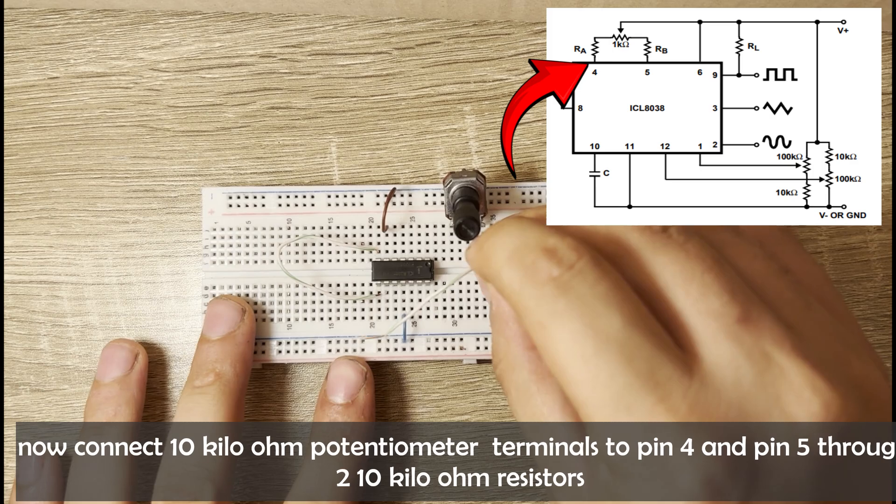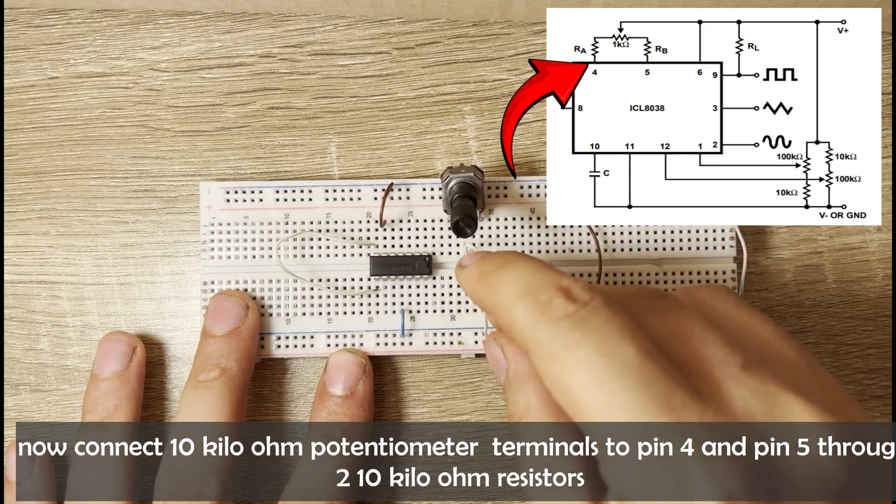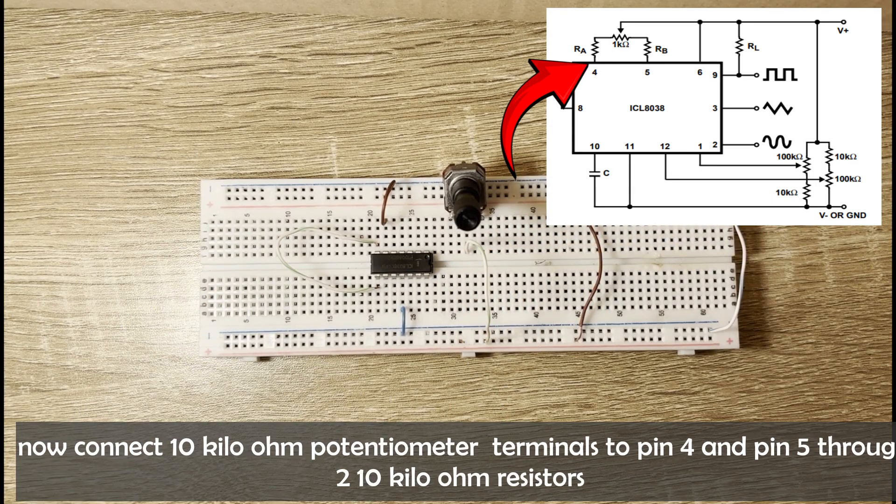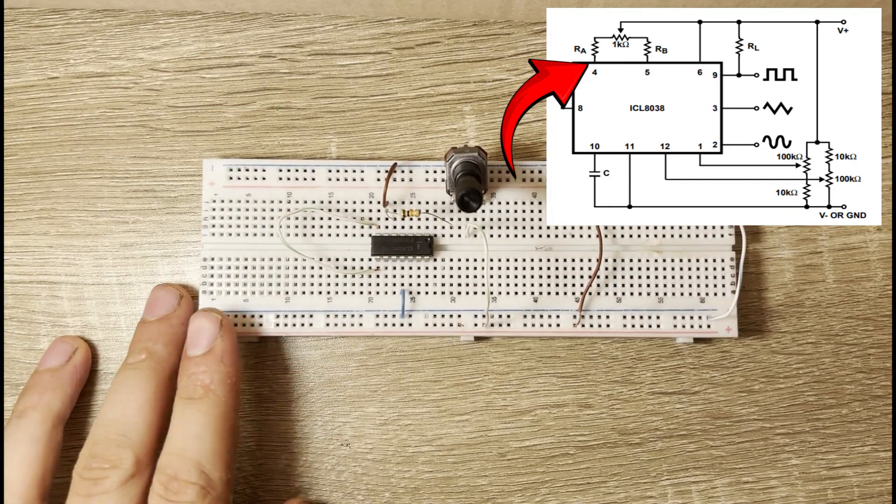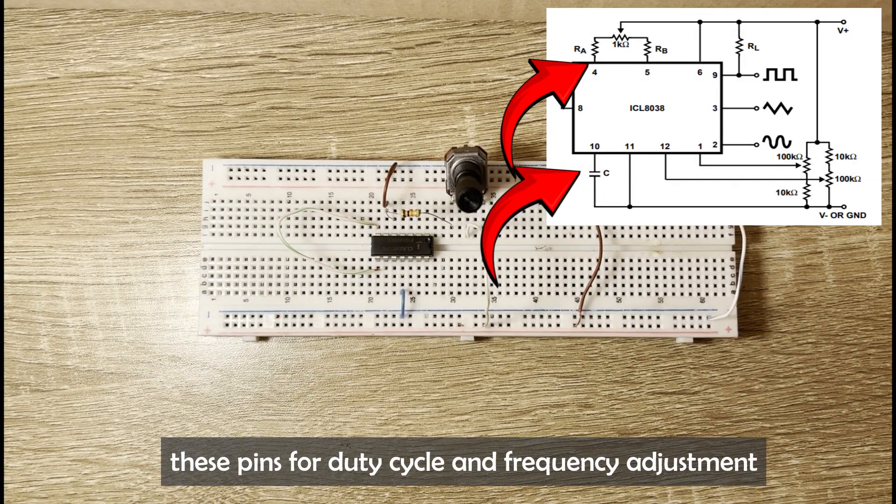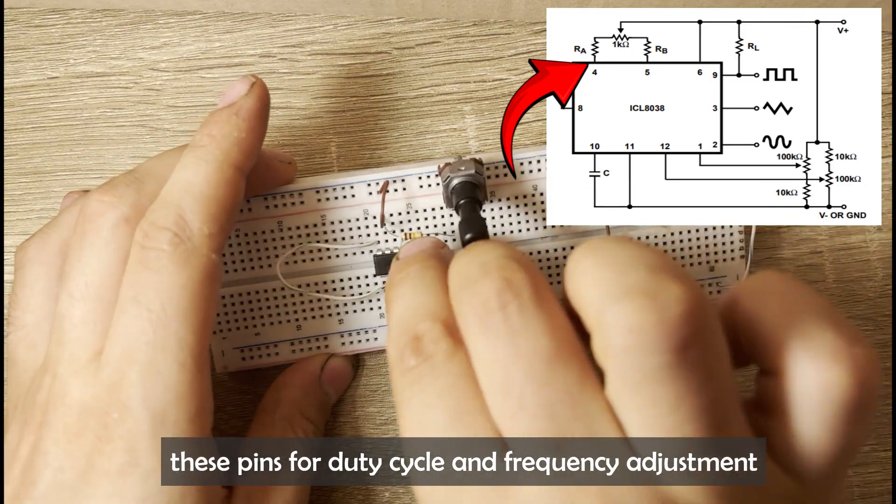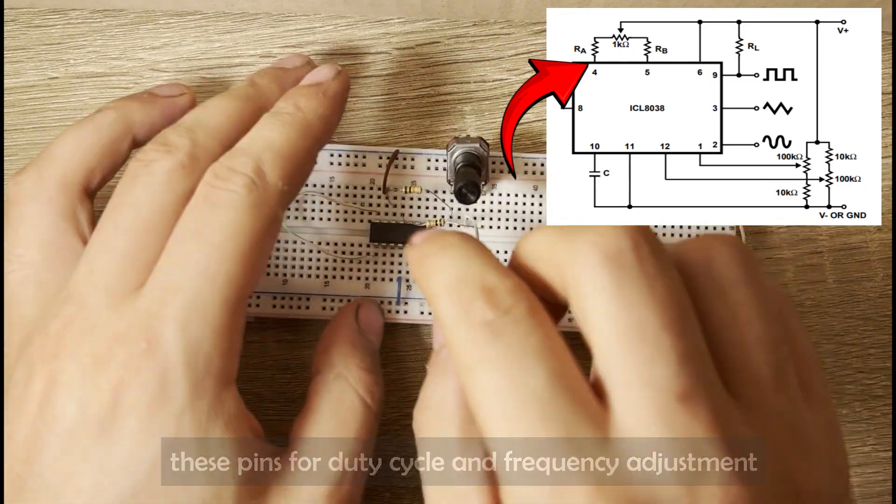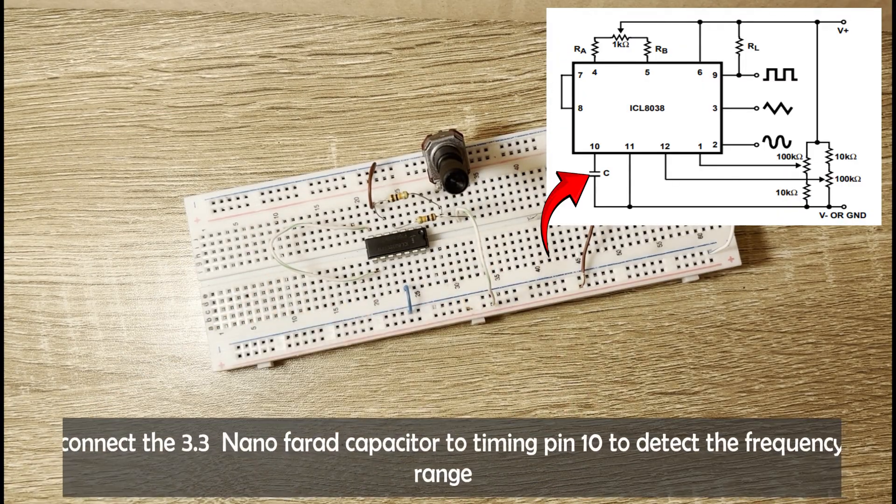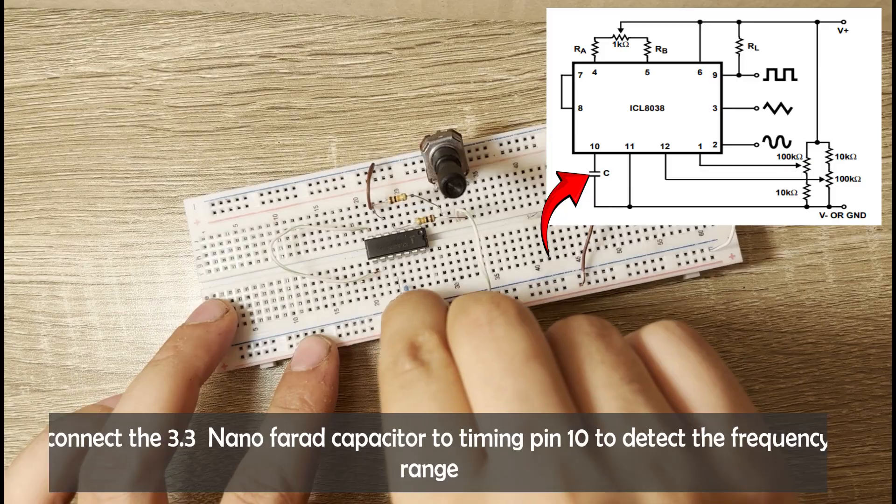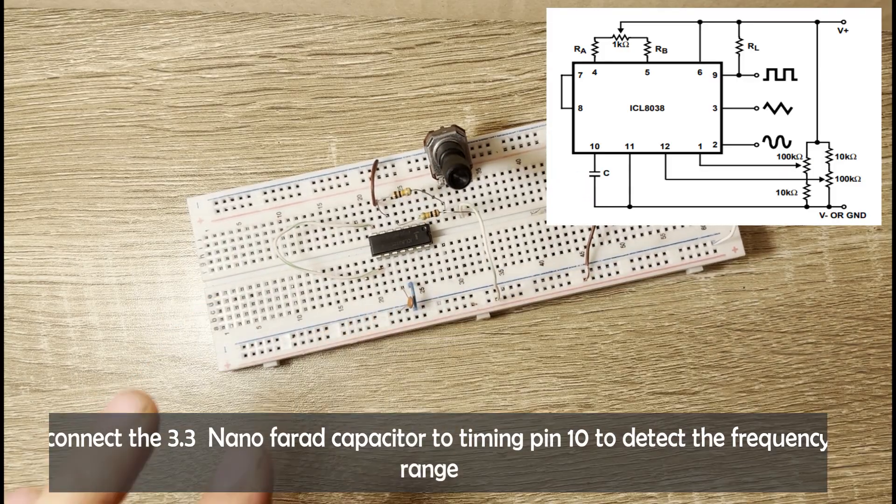Now connect the 10 kOhm potentiometer terminals to pin 4 and pin 5 through two 10 kOhm resistors. These pins are for duty cycle and frequency adjustment. Connect the 3.3 nanofarad capacitor to timing pin 10 that controls the frequency range.